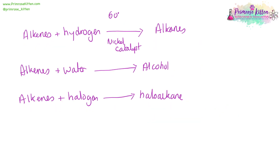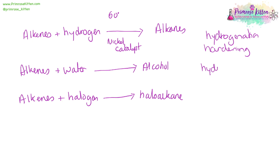If you are going to react an alkene with hydrogen, do it at 60 degrees and with a nickel catalyst. This is hydrogenation or hardening — you will go from double bonds to single bonds, giving alkanes. If you are going to react alkenes with water, you are going to get alcohol — this is hydration. And if you are going to react an alkene with a halogen, you are going to end up with a haloalkane.